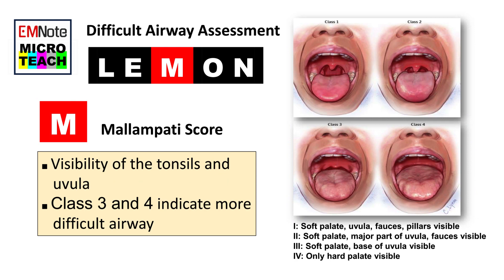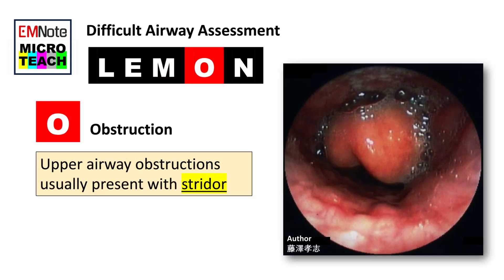M stands for Mallampati Score, which evaluates the visibility of the patient's tonsils and uvula. Class 1: the soft palate, uvula, fauces, and pillars are visible. Class 2: the soft palate, major part of uvula, and fauces are visible. Class 3: the soft palate and the base of uvula are visible. Class 4: only the hard palate is visible.